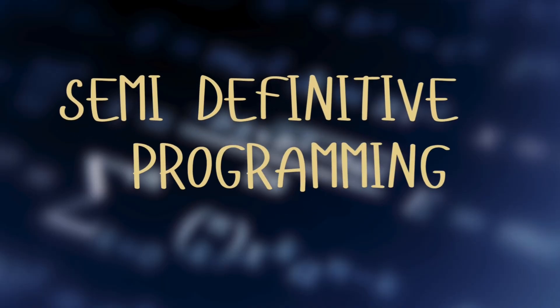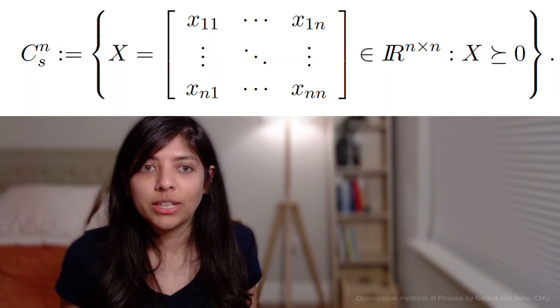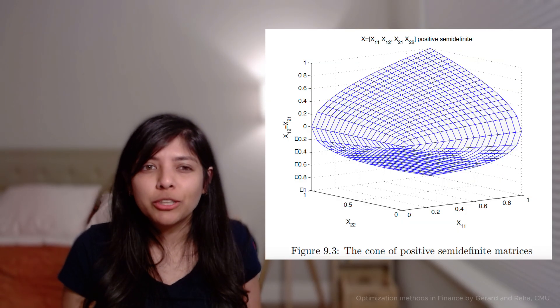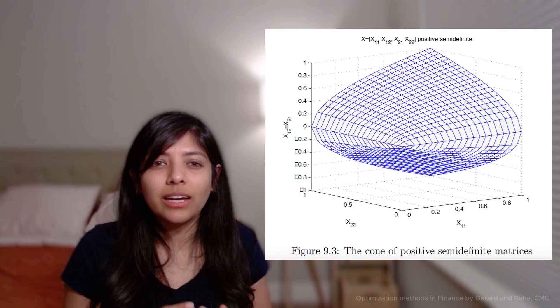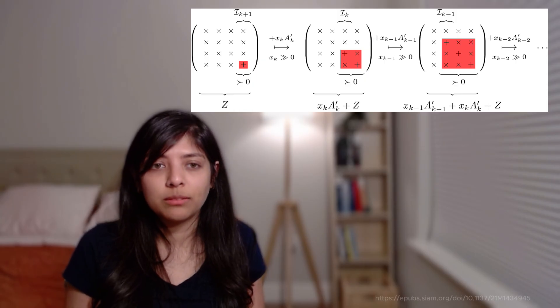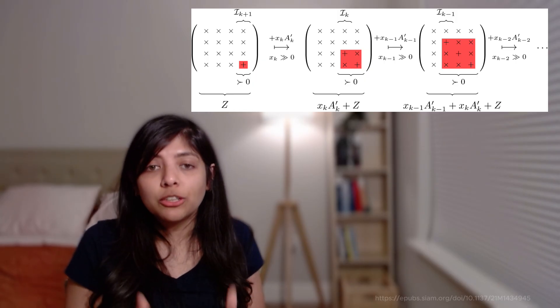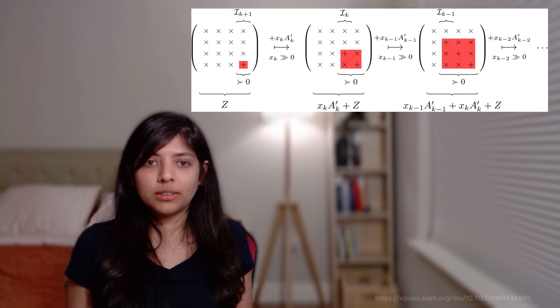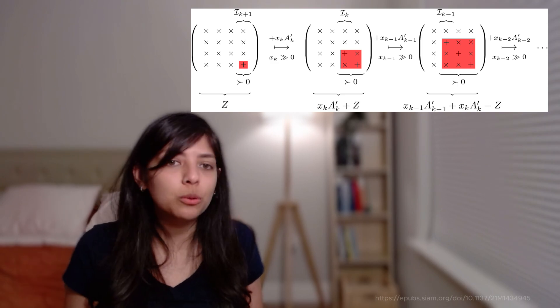Semi-definite programming. Now suppose instead of picking numbers or weights, you're working with a table of relationships between things — a matrix. You want to make sure that table behaves nicely, especially that it doesn't contain anything mathematically impossible like negative risk. Semi-definite programming helps you fix or improve these matrices by adjusting them just enough to make them mathematically sound. In other words: here's a messy table, please clean it, but don't change it too much.